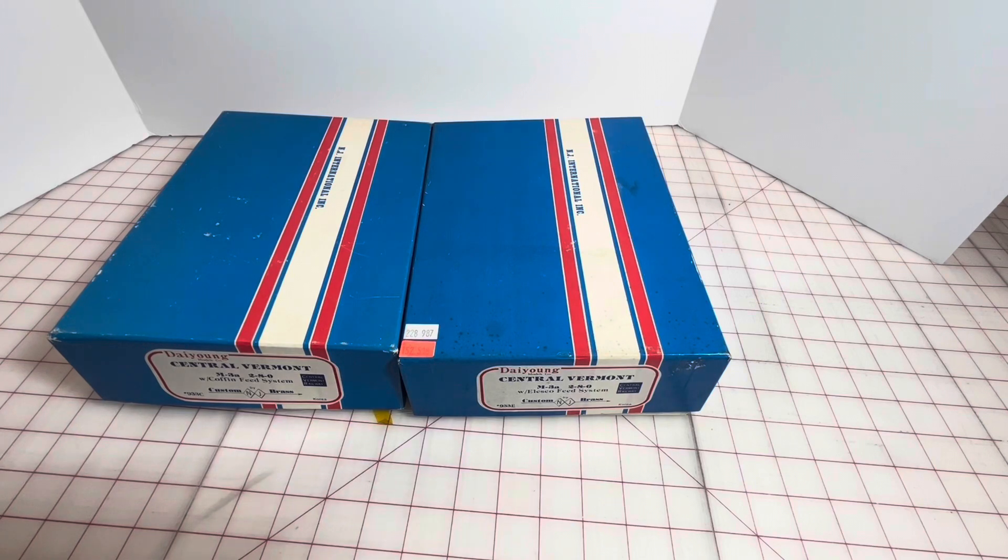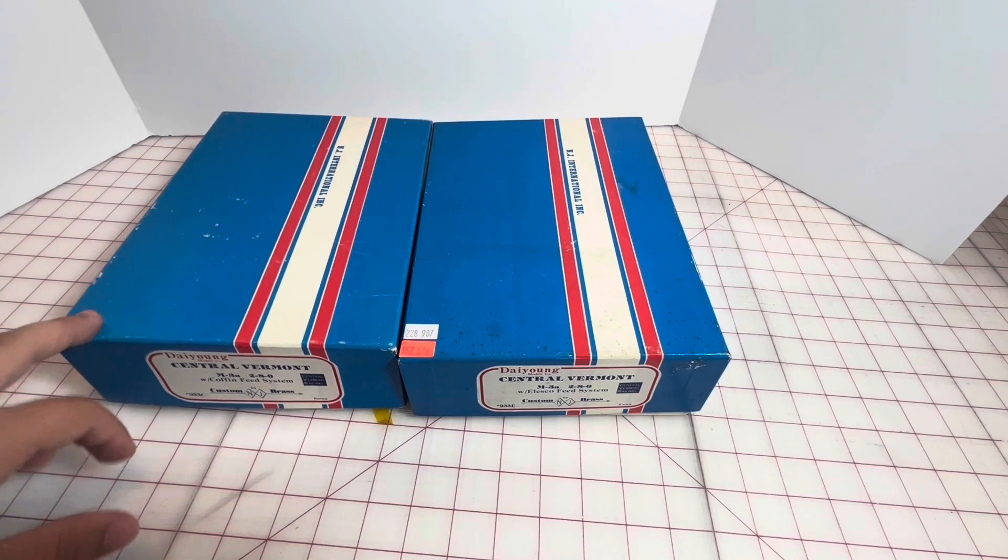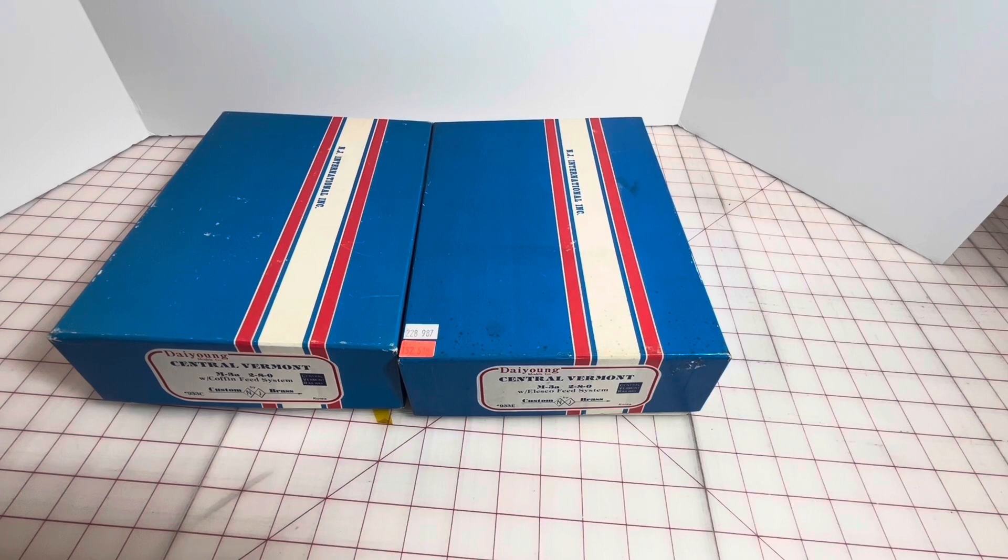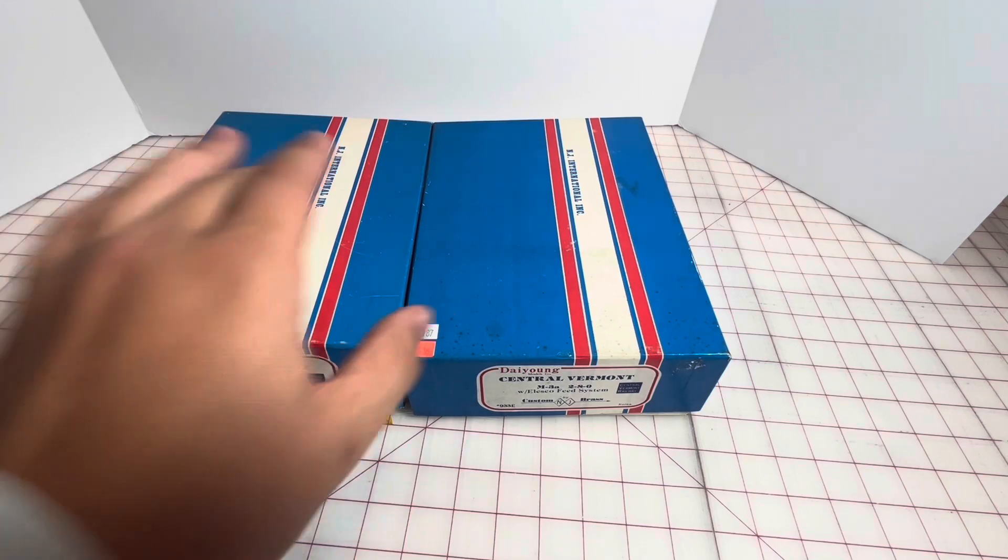A lot of engines had the Alesco, like some of the CNO 2-8-2s and a lot of New York Central engines, but not as many had the coffin. I mean there were some New Haven 2-10-2s that had them, and then there was the Sunset 2-8-2 for Denver and Salt Lake. That's the engine, so I guess we'll start with this one.